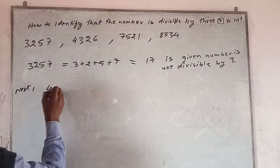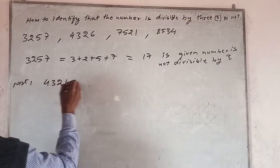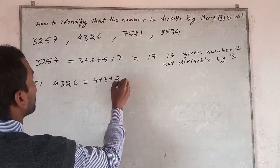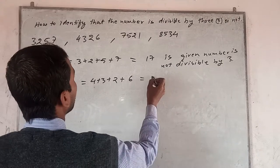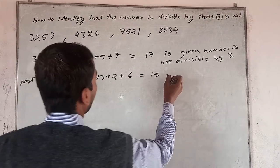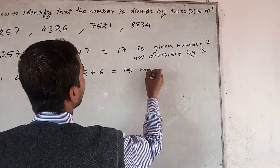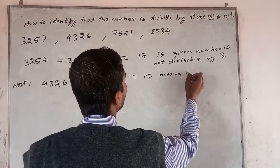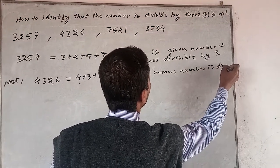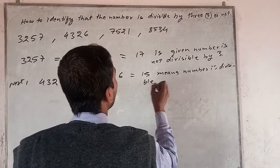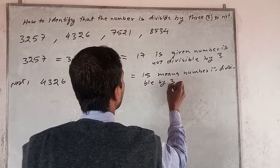Next, 4326. That's 4 plus 3 plus 2 plus 6, which equals 15. This means the number is divisible by 3.